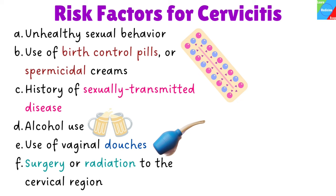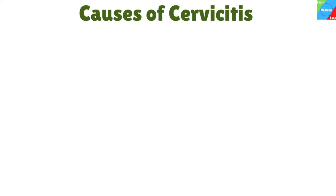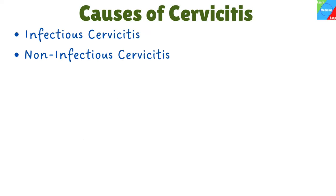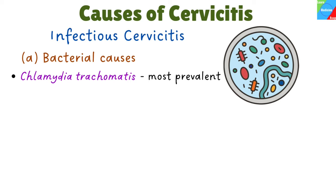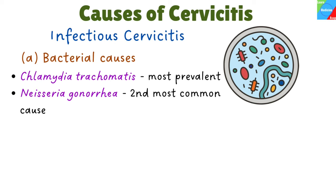The causes of cervicitis can be divided into two categories based on the types: infectious cervicitis and non-infectious cervicitis. Beginning with the infectious causes, Chlamydia trachomatis is the most prevalent infectious cause of cervicitis. It is followed by Neisseria gonorrhoeae as the second most common cause.